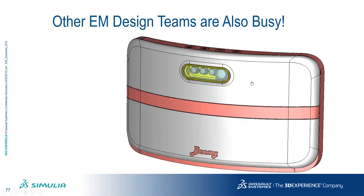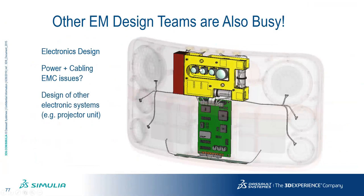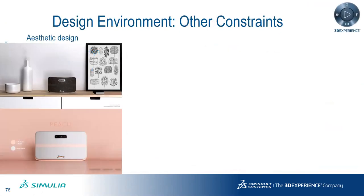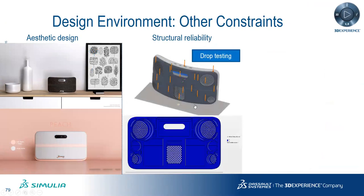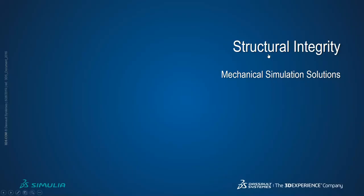Other design teams are also at work: electronics design, power and cabling, EMC teams, and the projector unit team — all of which can be handled within the Simulia suite of tools, including tools for analyzing cable shielding and radiation interference with antennas. Additional constraints come from aesthetics design, structural reliability, drop testing, and thermal management. With that, the presentation is passed back to Arindam to discuss structural integrity.